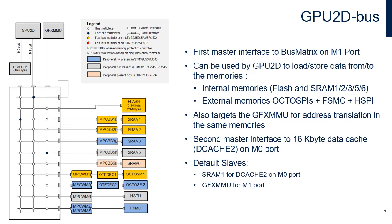These buses connect the GPU2D master interfaces to the bus matrix and are used by the GPU2D to load and store data from and to the memory. These buses target the GFX MMU in addition to the data memories — internal flash memory, internal SRAMs (SRAM1, SRAM2, SRAM3, SRAM5 and SRAM6) and external memories through FSMC, HSPI1 or OctoSPIs. A 16 KB data cache (DCACH2) is present on the GPU2D M0 port to improve performance when fetching data from external memories. The default slaves are SRAM1 for DCACH2 and GFX MMU for the M1 port.